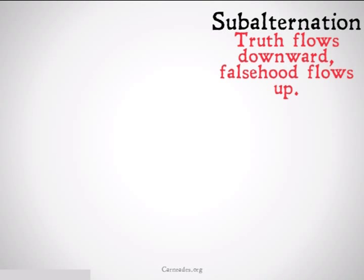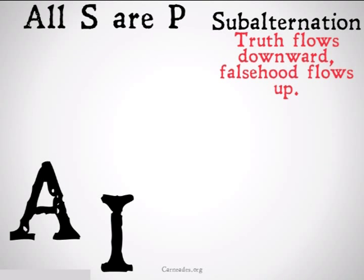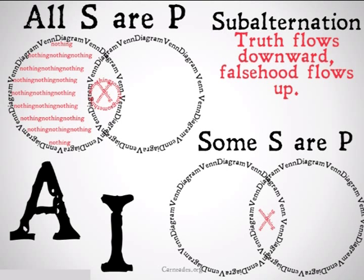In this case, truth flows downward and falsehood flows up. This relation exists between A and I statements, because if, for Aristotle, all S is P, then it will be the case that some S is P — truth flows downward from A to I.